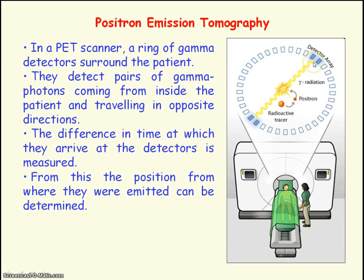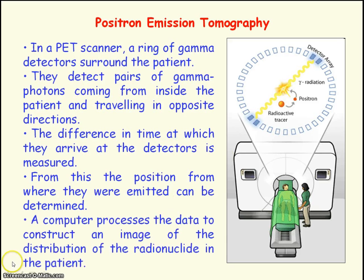From the delay time, the position where the gamma rays originated inside the patient can be determined. The gamma photon that arrives first at the detector will have travelled a shorter distance compared to its oppositely travelling gamma photon. Using the speed of the gamma radiation and multiplying by the delay time, you can determine the additional distance the oppositely moving gamma photon has travelled, and hence determine where the two gamma ray photons originated inside the body. A computer processes all this data to construct an image of the distribution of the radionuclide inside the patient.